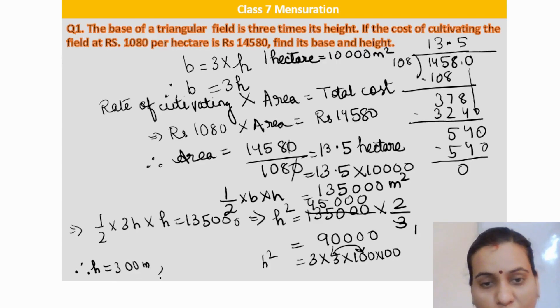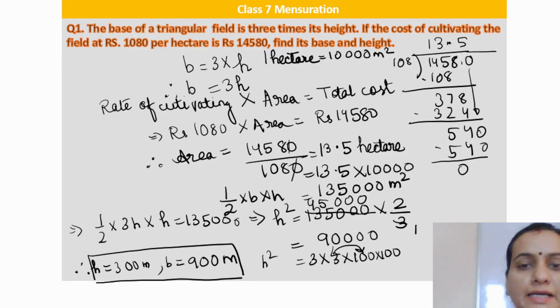90,000 is 9 times 10,000, which is 3 times 3 times 100 times 100. So h is equal to 3 times 100, h is equal to 300 meter. Similarly base will be equal to 3 times height, so 3 times 300 is 900 meter.